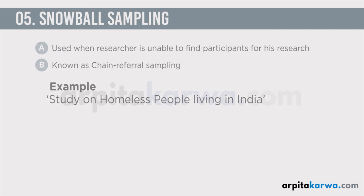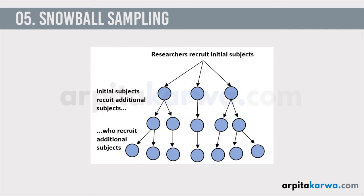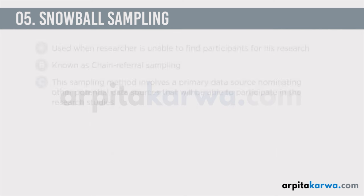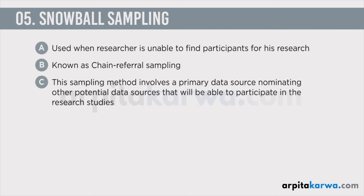So this is all about snowball sampling, and with that I come to an end of non-probability sampling, where we have discussed convenience sampling, judgmental sampling, quota sampling, and snowball sampling. That's it for this video lecture. We'll meet soon in the next video lecture. Till the time we meet next, happy learning, keep loving literature and stay tuned to arpitakarwa.com.